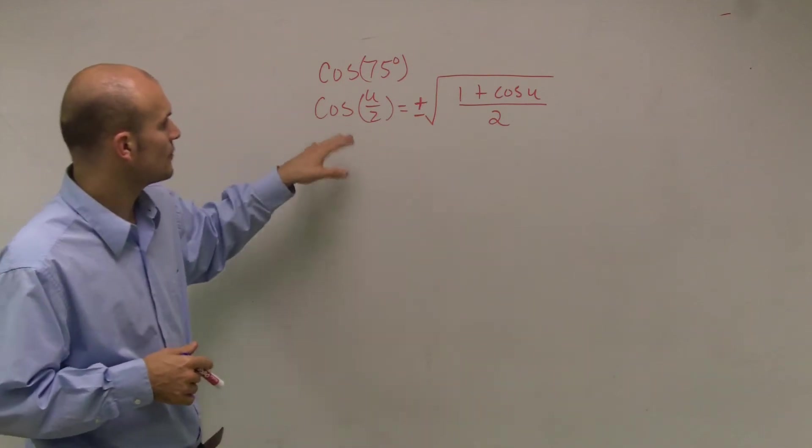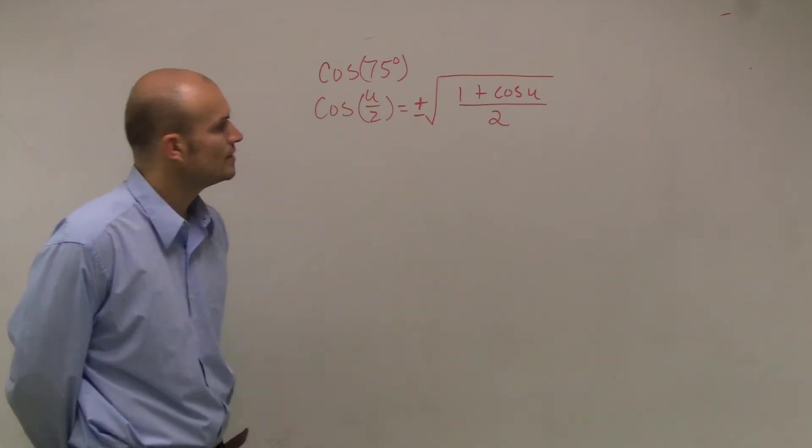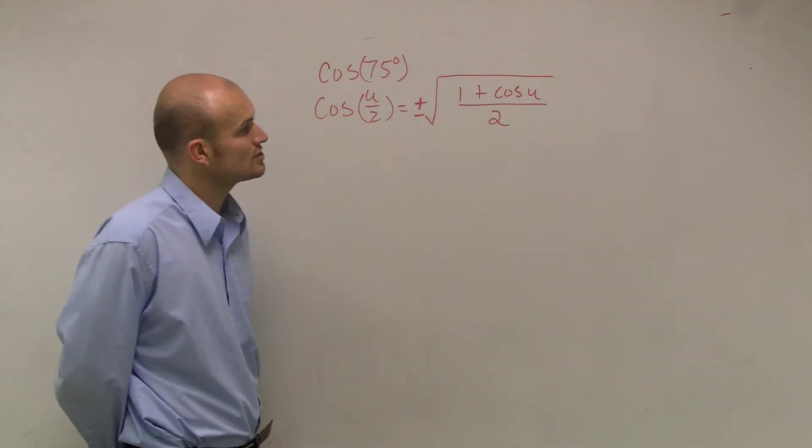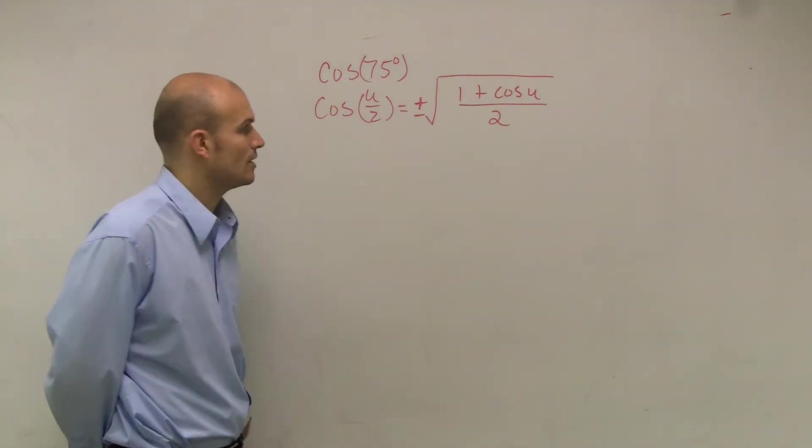So the half-angle formula says cosine u divided by 2 equals plus or minus the square root of 1 plus cosine of u, all divided by 2.